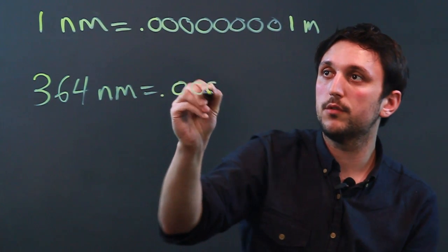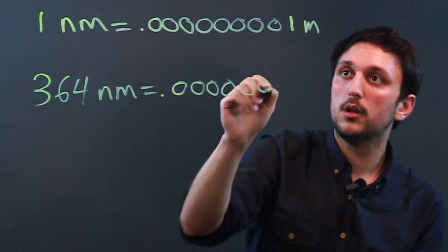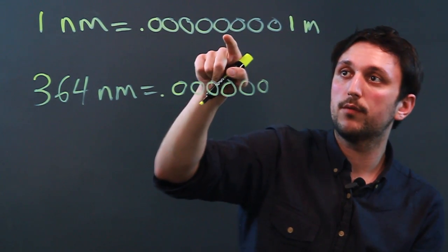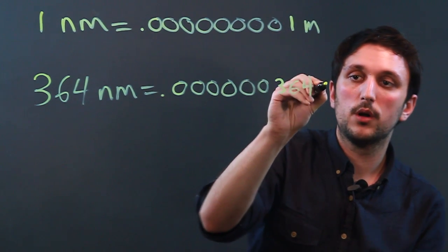Meaning point zero, zero, zero, zero, zero, and then one, two, three, four, five, six—one, two, three, four, three, six, four meters.